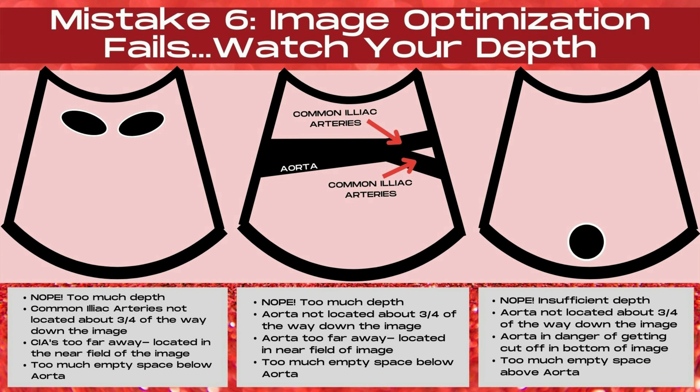Also, there's too much empty space below the aorta. Every image is telling a story, and in this image the story is that the fat and bowel below the common iliac arteries are the star rather than the arteries themselves. In the middle image, there's also too much depth — the sagittal aorta is not located about three quarters of the way down; it's too far away and too small in the near field.